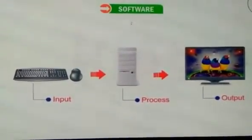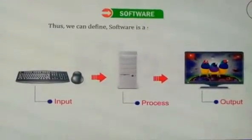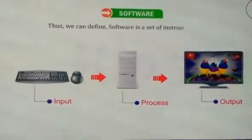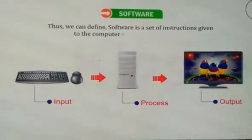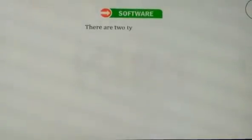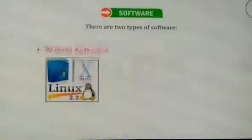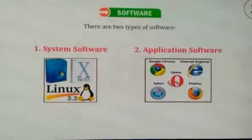So, we can define software as a set of instructions given to the computer to do a particular work. There are two types of software: system software and application software.